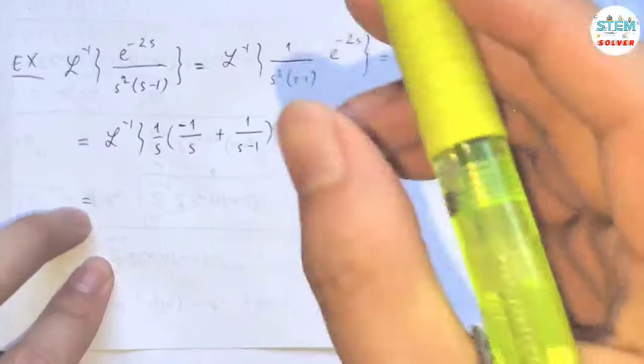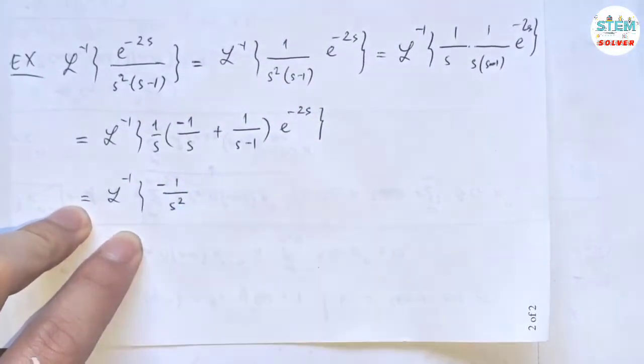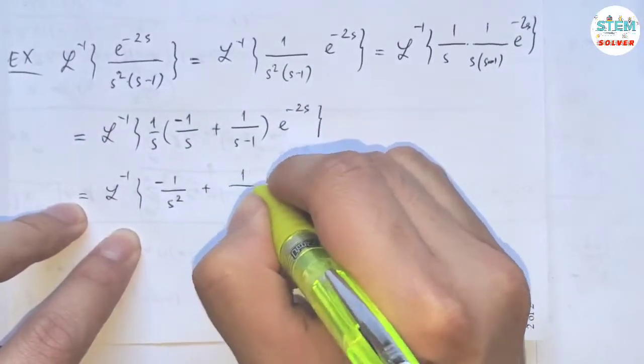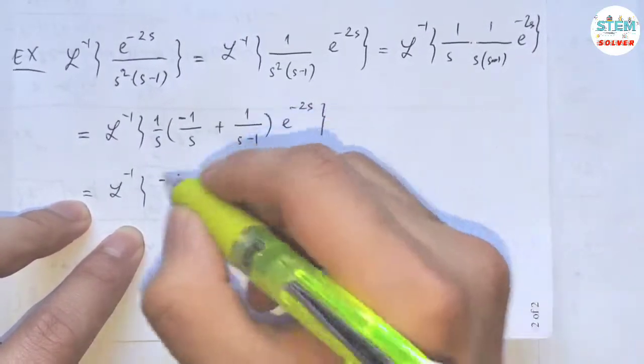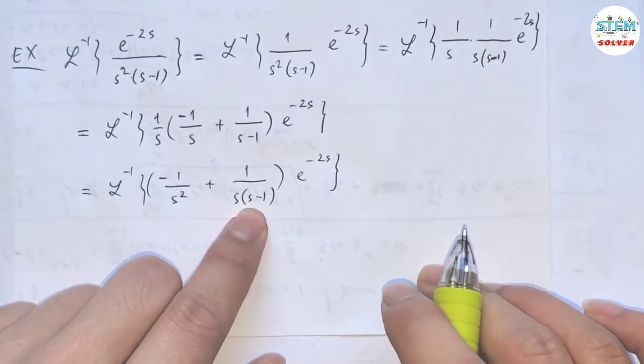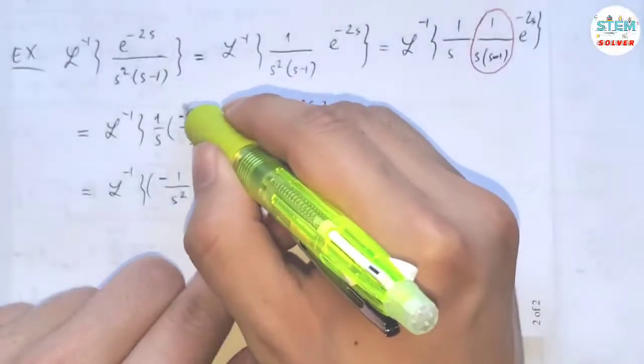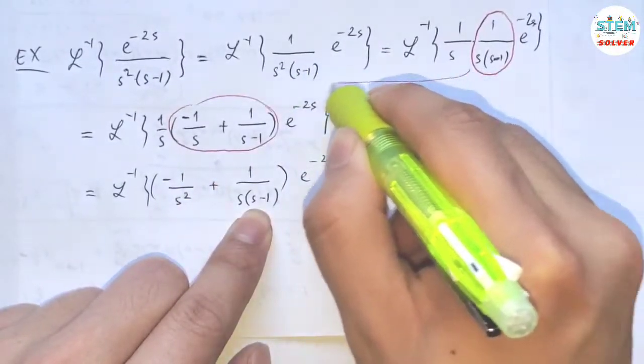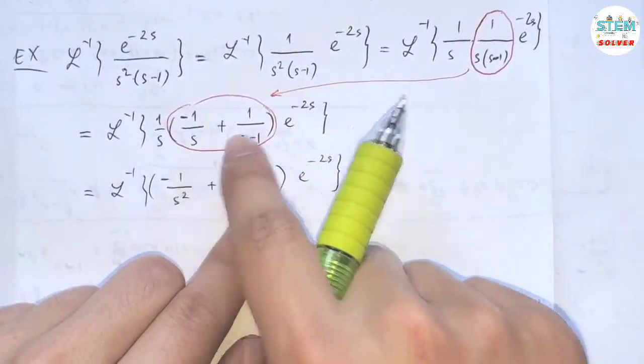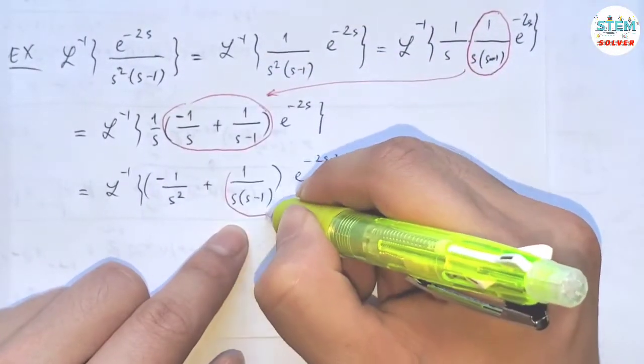Now, distribute this out. Then I have negative 1 over s squared plus 1 over s times s minus 1, and all of these multiplied by e to the negative 2s. Again, you have 1 over s times s minus 1, right? So we already did it down here. Okay? So this is the same as this, and we have this again. So basically, you just plug this into here.